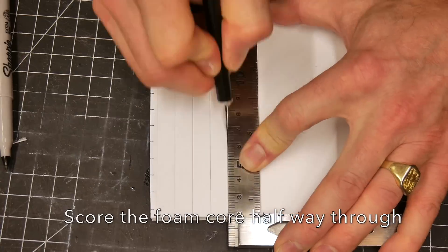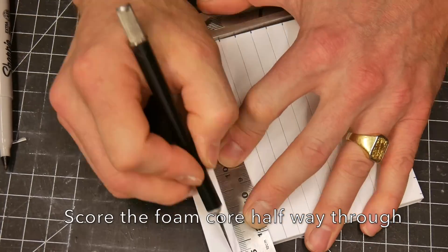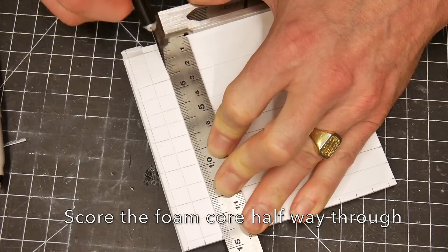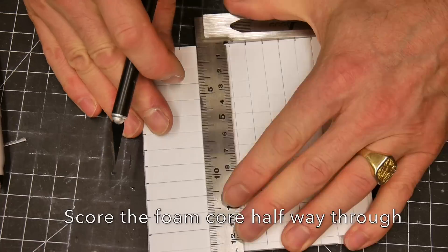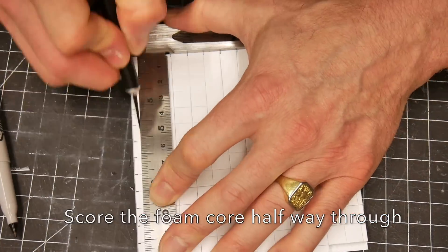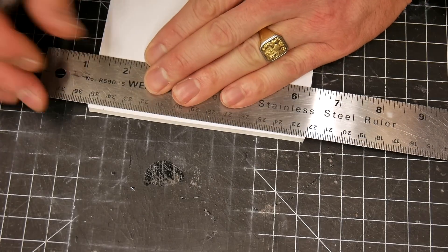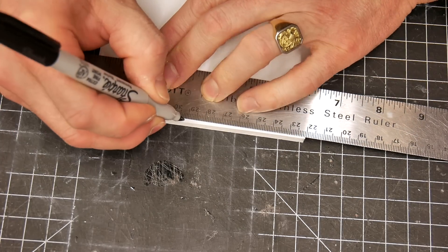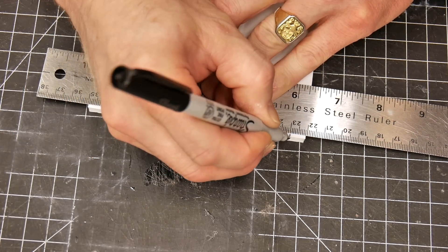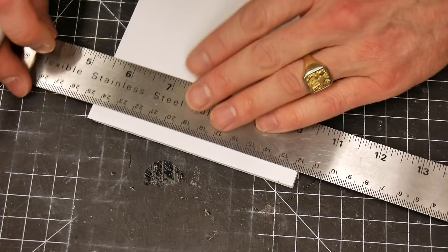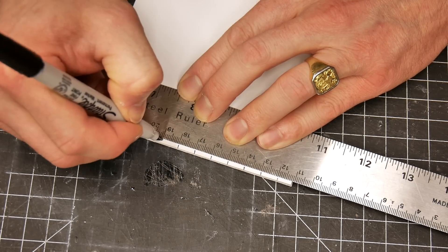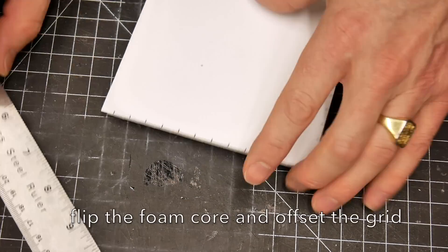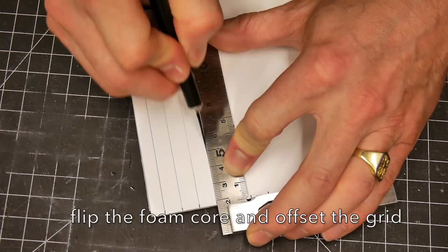So we're gonna take advantage of the properties of foam core. We're gonna make an organic surface, something that you could not do with a piece of paper. Because foam core is a composite material meaning it has a paper on both sides of a flexible inside. We are gonna score a grid pattern on each side of the foam core and allow the composite structure to become flexible.